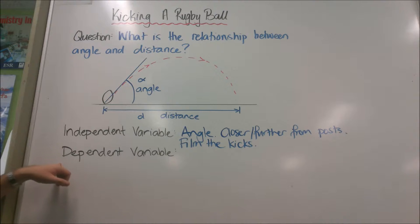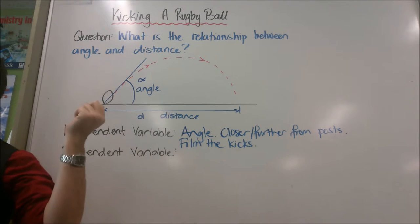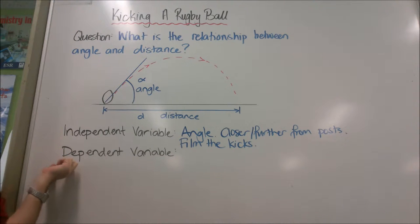The dependent variable is the one that changes because we changed the independent one, so it's the one that we are going to have to measure. So we're going to change the angle on purpose and it should change what? What should change because of different angles? Distance, well done.